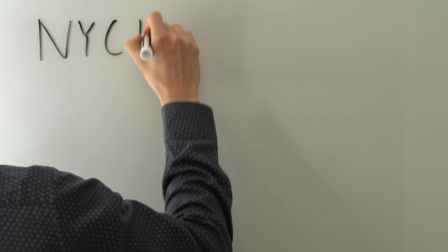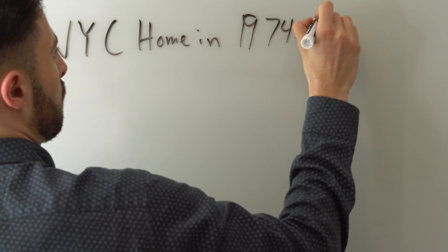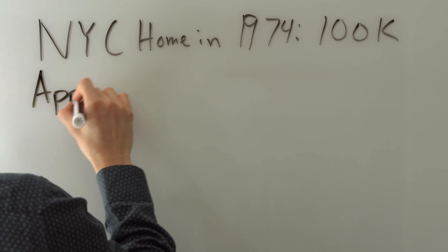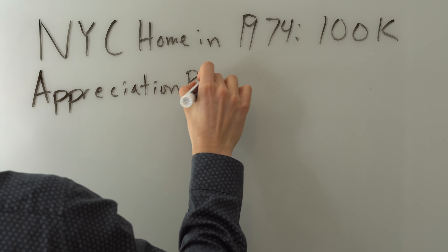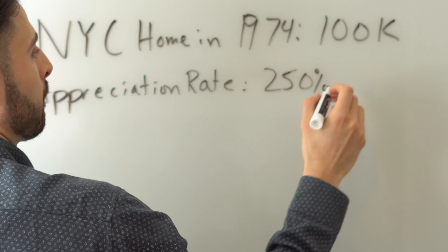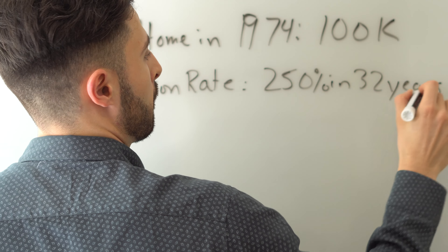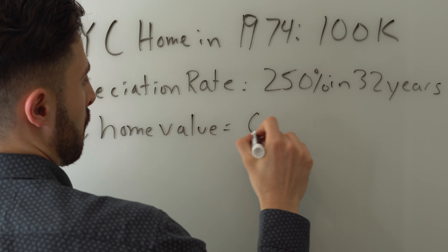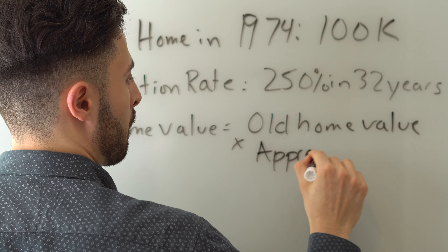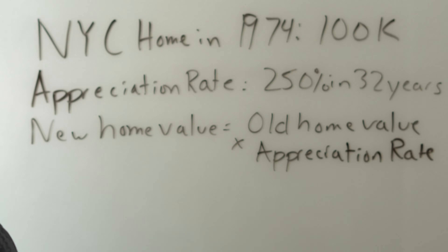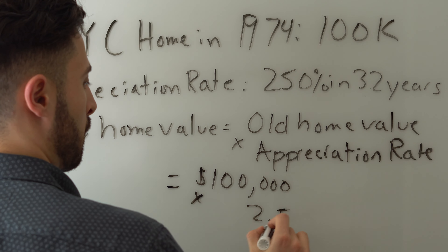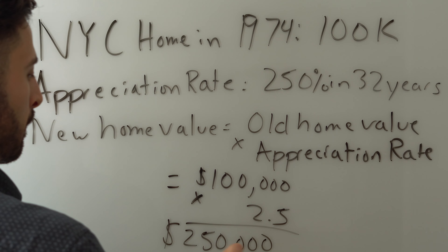So first, you take your original home value that you bought it for in 1974, which was $100,000. The appreciation rate is simply the percentage that the home increased over time — that's it. Our appreciation rate was 250% over 32 years, so our period is 32 years. Starting from 1974 at $100K, you multiply the $100K original home value by 2.5. This gives you the actual appreciated home value, which is $250,000 in 2006. So in 2006, if you bought a home in 1974 for $100K, it would be worth $250,000 in Manhattan.